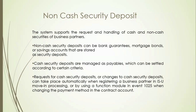So in that case, we don't have any cash. We just need to put that mortgage bond details into our FI segment. A statistical amount of that cash security deposit is managed as payable, which can be settled according to certain criteria. Whereas request for cash security deposit or change to cash security deposit can take place automatically when they register a business partner in ISM. That bank guarantee or mortgage bond can be converted into cash once the whole contract account and contract are linked and we apply function 1025.